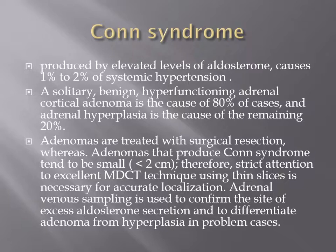Conn's syndrome is produced by elevated aldosterone levels and causes 1 to 2% of systemic hypertension. It appears as a solitary, benign, hyperfunctioning adrenal adenoma, usually less than 2 cm in size. Multi-detector CT using thin slices should be done to detect accurate localization of the adenoma. Adrenal venous sampling may confirm the site of excess aldosterone secretion and differentiate adenoma from hyperplasia — 80% is due to adrenal adenoma and 20% due to adrenal hyperplasia.